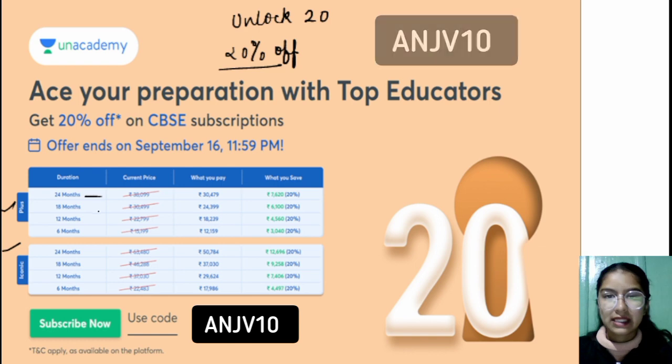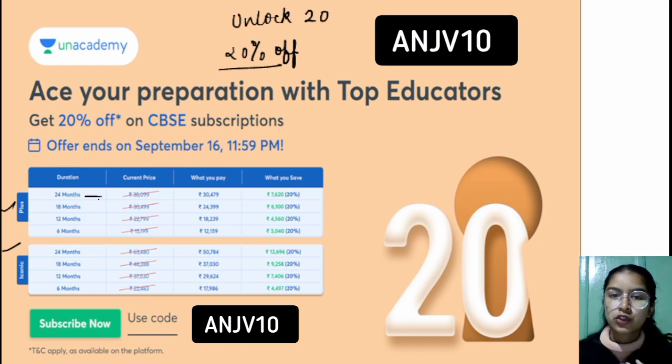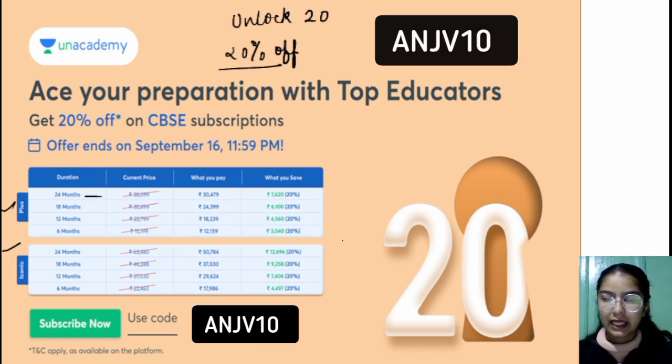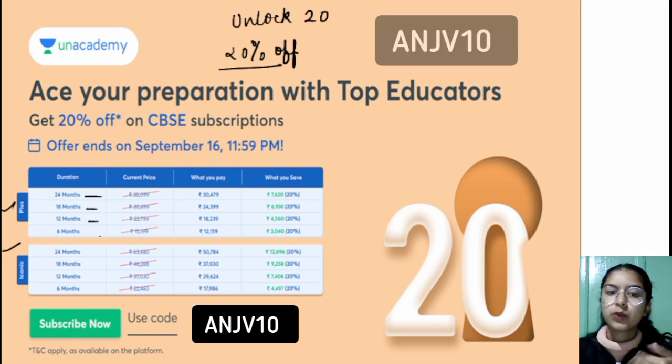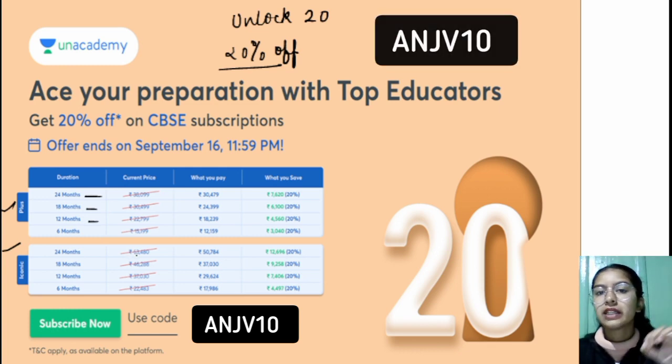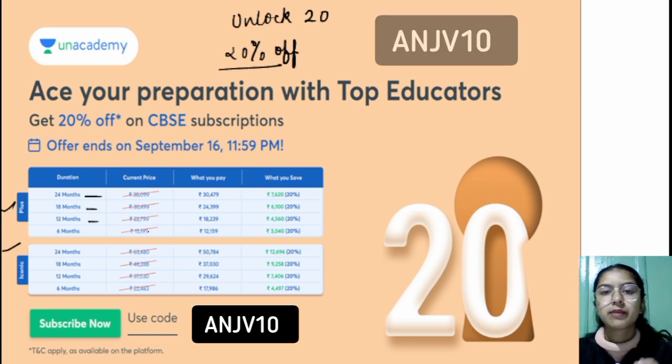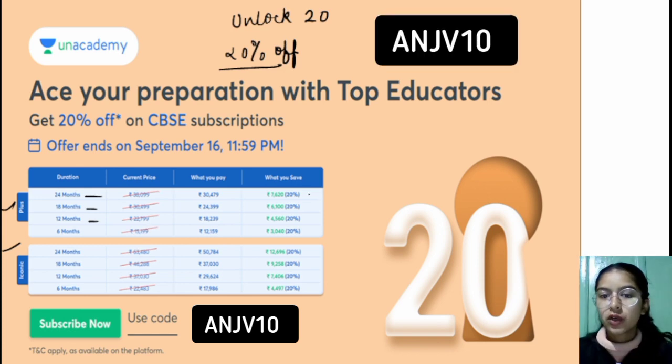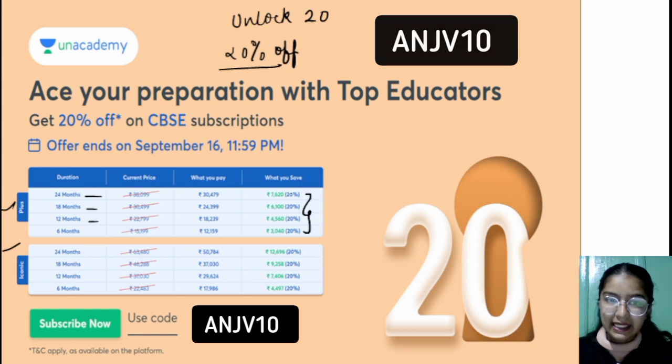If you want to purchase 24 months, in that case, the discount is maximum. And if you want to do 18 months or 12 months, these are the prices that have been mentioned. If you want to take 20% off the offer by using my code, which is ANJV10, you will save that amount easily.